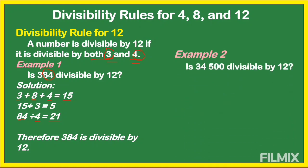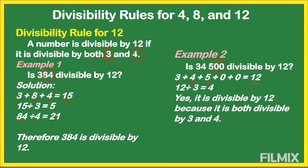Is 34,500 divisible by 12? Let's check whether this number is divisible by 3 by adding all the digits: 3 plus 4 plus 5 plus 0 plus 0 equals 12. And 12 is a multiple of 3. Next, for the divisibility rule for 4, it ends with two zeros, and a number ending in two zeros is always divisible by 4. So 34,500 is divisible by 12 because it is both divisible by 3 and 4.